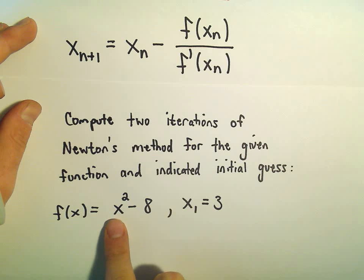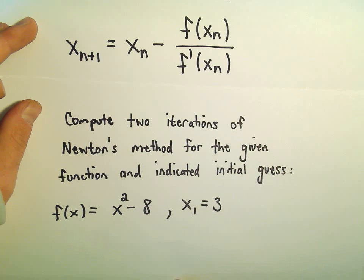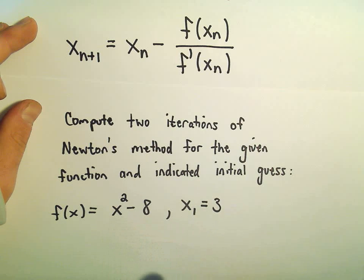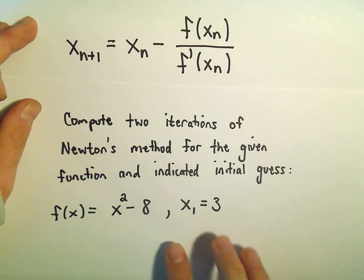you would get 3 squared, which is 9, 9 minus 8 would be 1, and hey, 1 is pretty close to 0, so 3 is not a root, but it's pretty close to being 1. Okay, so this is going to be our first guess.